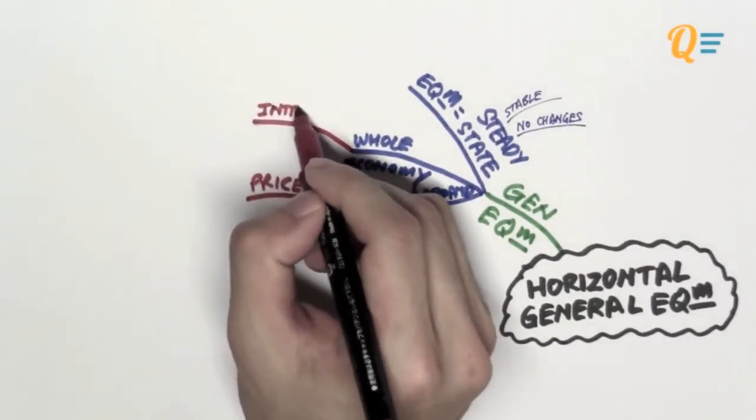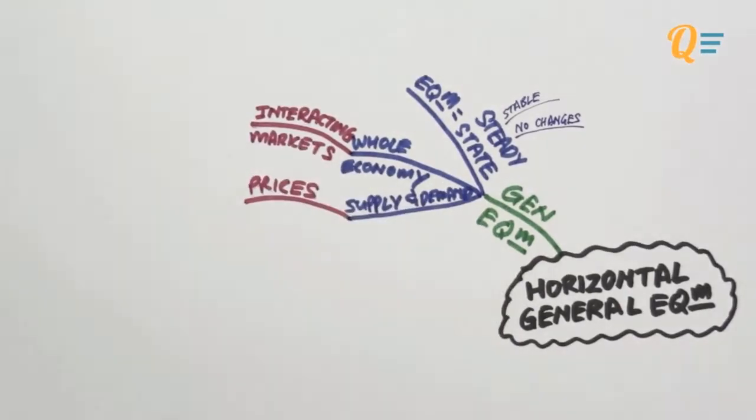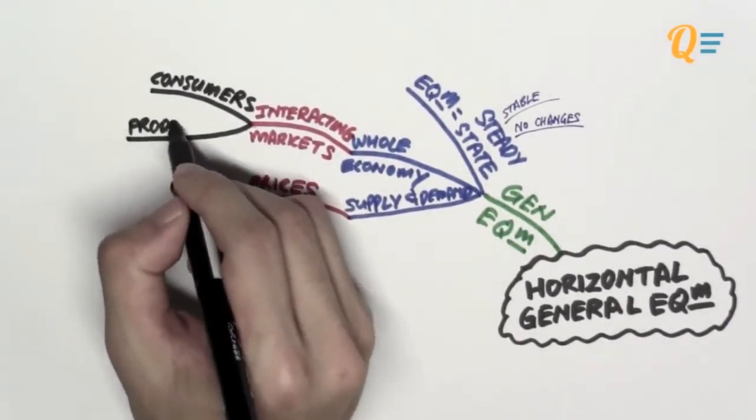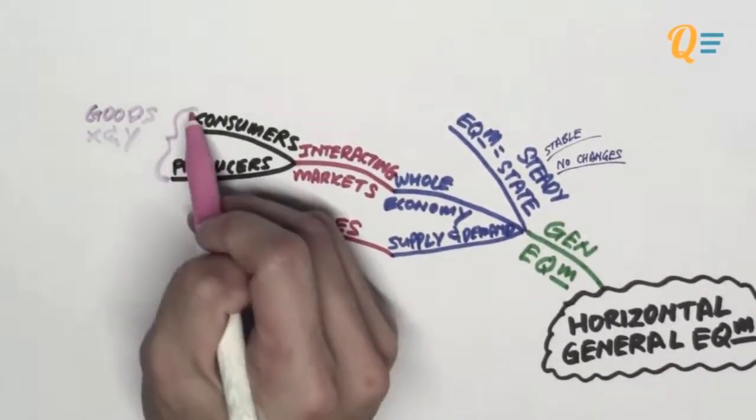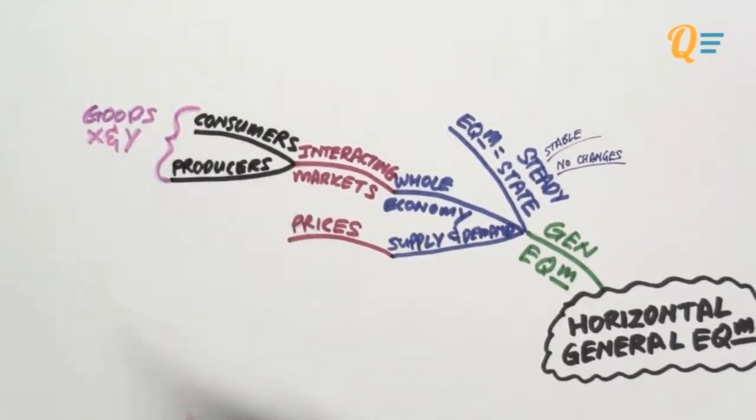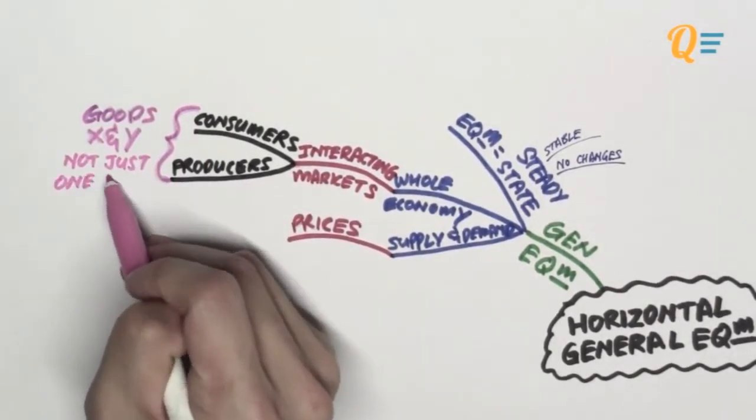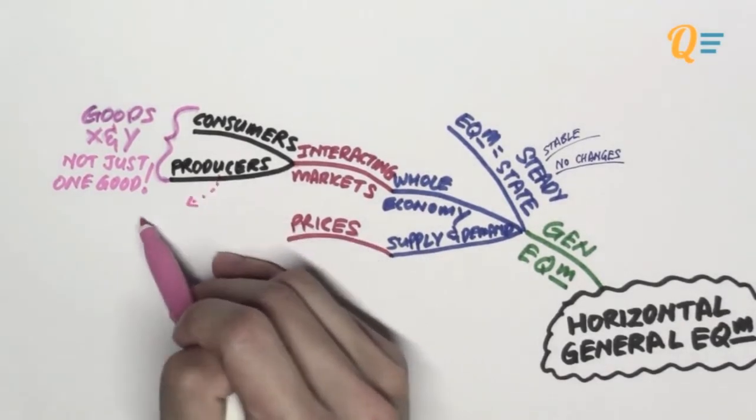When I say the whole economy, I'm talking about interacting markets between consumers and producers themselves. I'm not only considering the market for one particular good, but I'm talking about many goods. It could be good X and good Y. In general equilibrium, you cannot just look at one single good. You need to look at how the market for good X might affect the market for good Y.